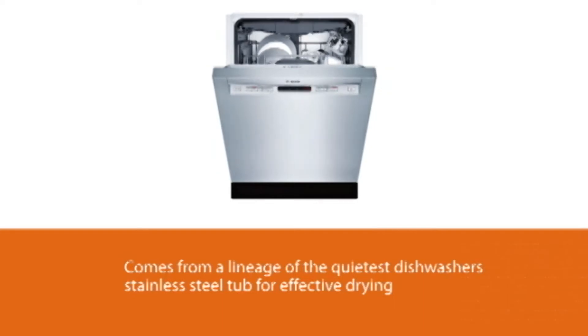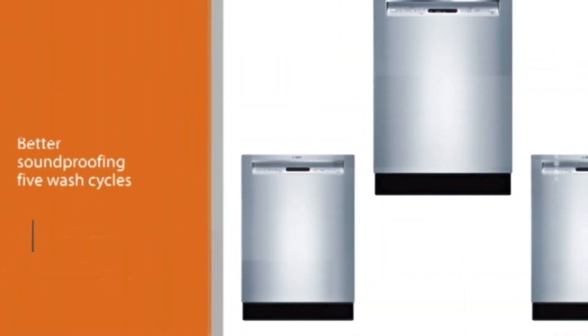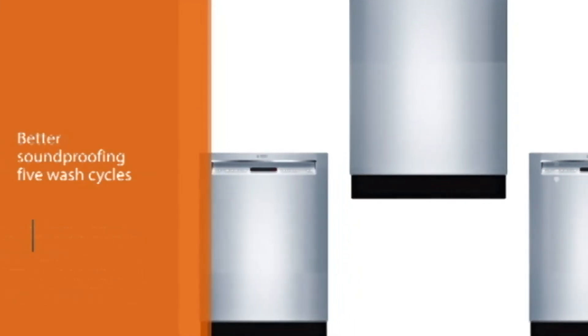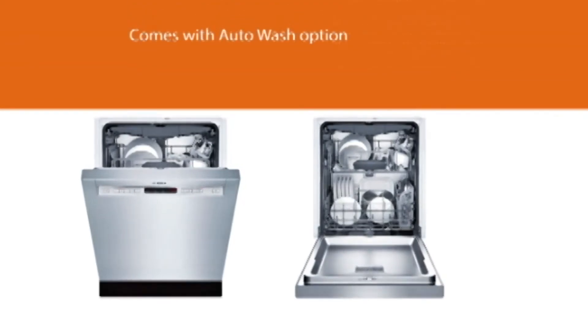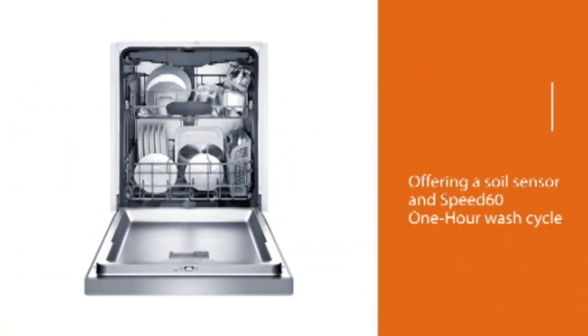Features include a stainless steel tub for effective drying and better soundproofing, plus a higher durability rating. The 5 wash cycles and 4 options are powerful enough for all types of soiling. The auto wash option is sure to be a favorite, offering a soil sensor and speed 61-hour wash cycle to give you exactly the level of cleaning you need in a shorter period of time.